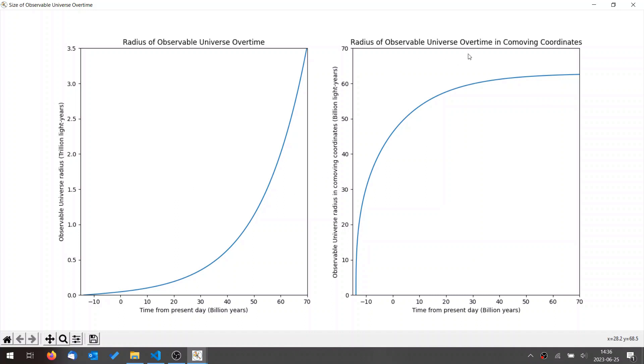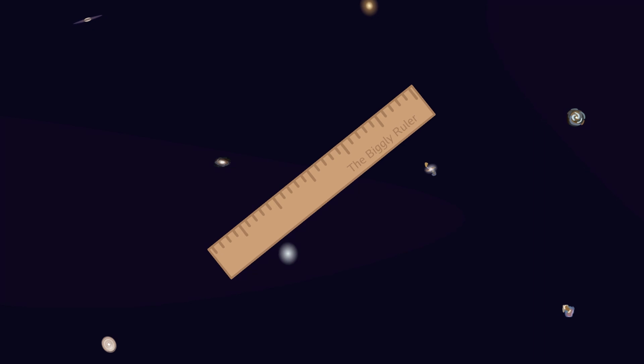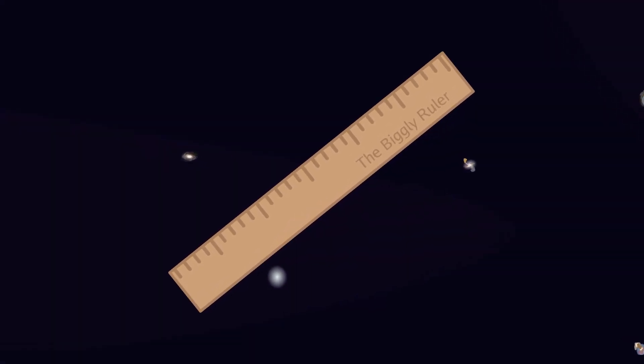On this diagram, we see the radius of the observable universe over time in co-moving coordinates. In co-moving coordinates, the coordinate system scales with the universe. If a galaxy is 100 million light years away, and due to the expansion of the universe, its distance grows to 200 million light years away,